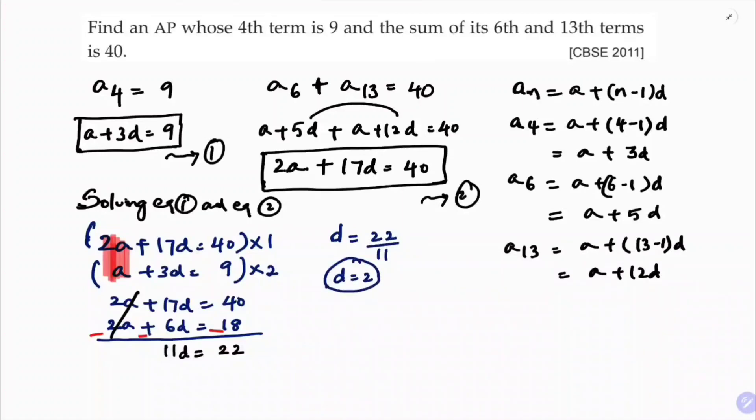Now substitute the value of D in any one of the equation. I will substitute in the first one. So first one A plus 3D is 9. So A plus 3 times 2 is 9. A plus 6 equals 9. So A equals 9 minus 6. So the value of A is 3.